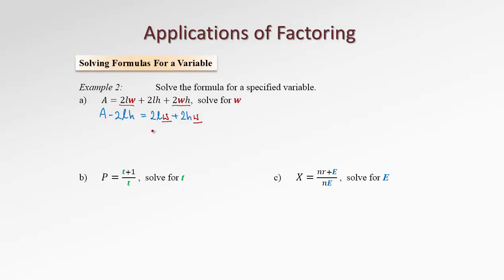Let's take this common factor W out of the bracket. And what's left inside is 2L plus 2H. Let's copy the other side. A minus 2LH.